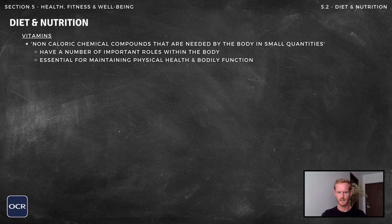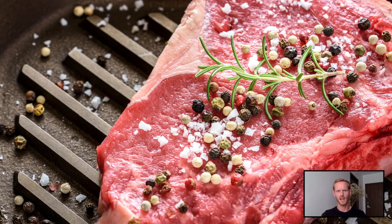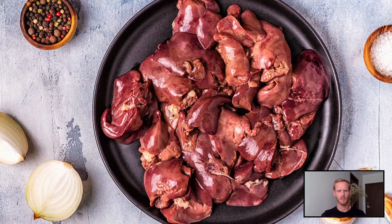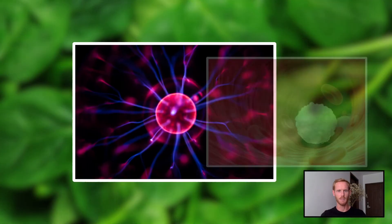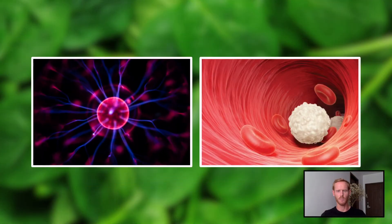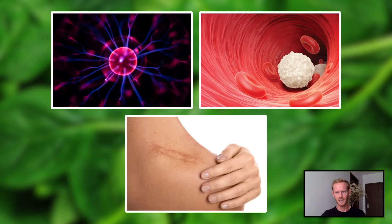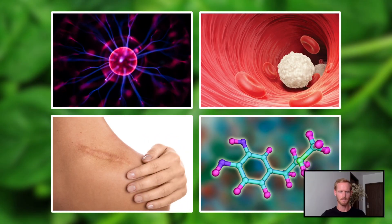Vitamins are non-caloric chemical compounds that are needed by the body in small quantities. They are found in abundance in red meats, organ meats like liver and kidneys, eggs and various fruits and vegetables. Vitamins play a key role in energy production and metabolic health, immune function and the prevention of disease, wound healing and hormone regulation.